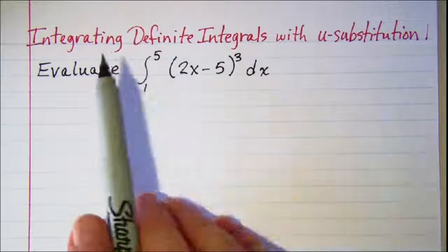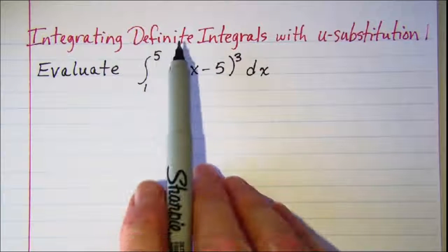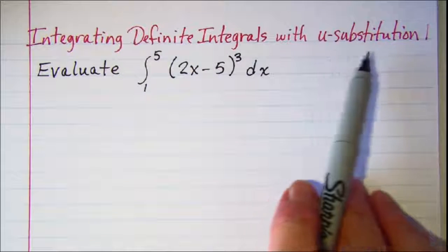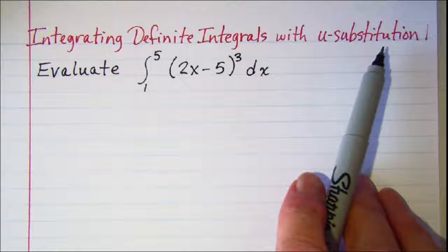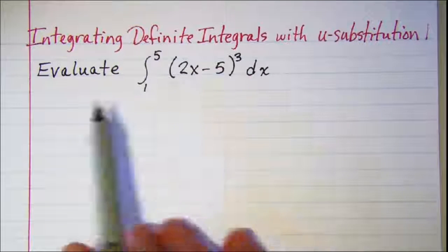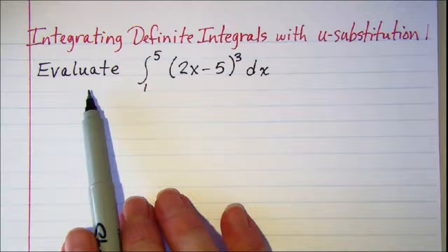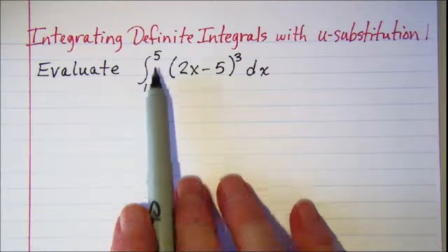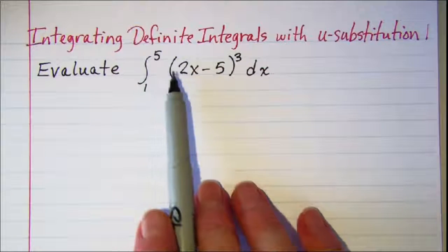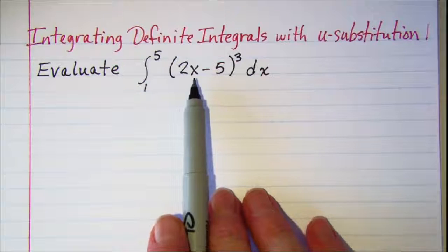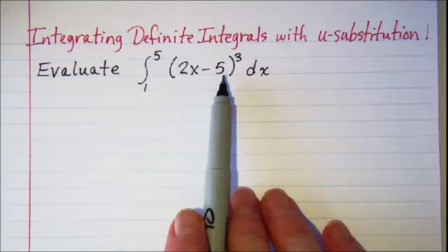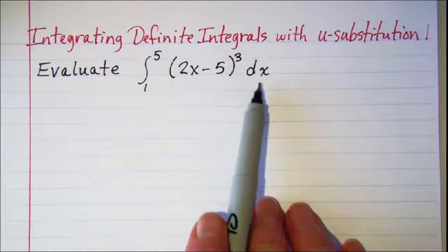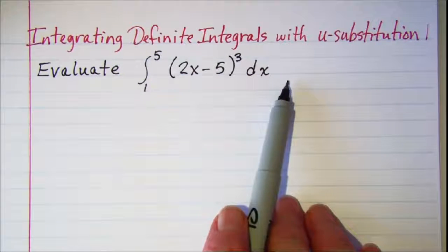In this video we'll be integrating a definite integral with u-substitution. Our problem is to evaluate the integral from 1 to 5 of the quantity 2x minus 5 raised to the third power dx.